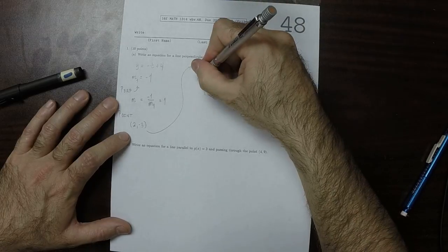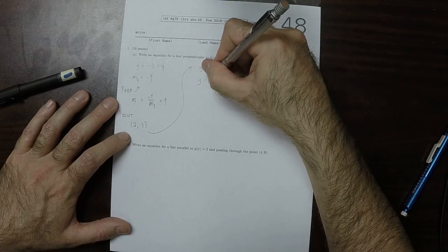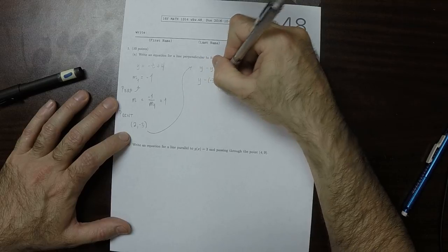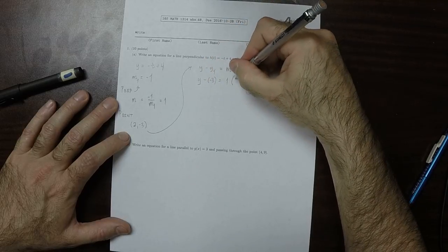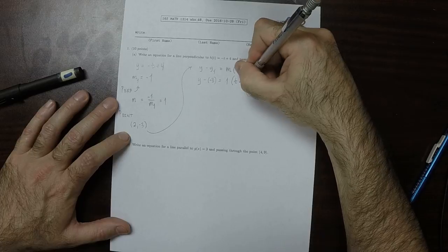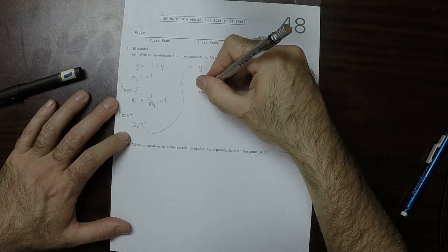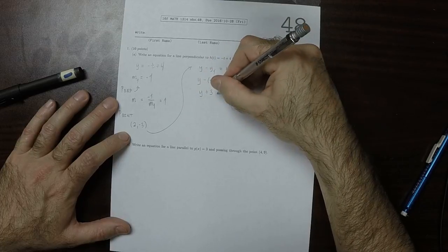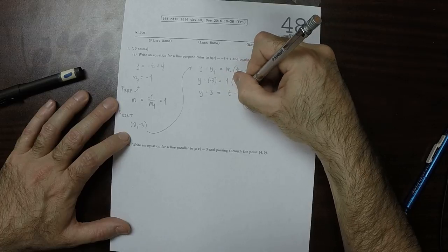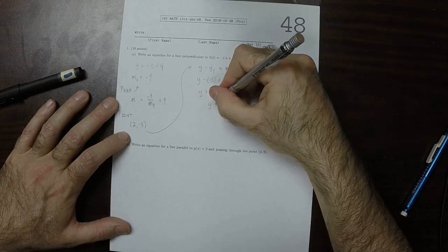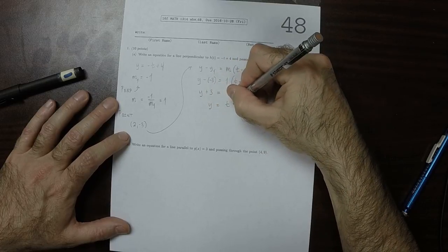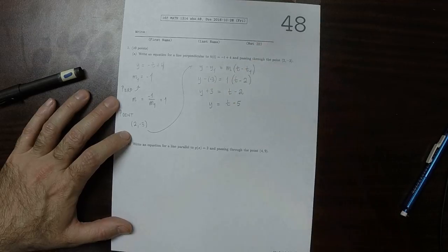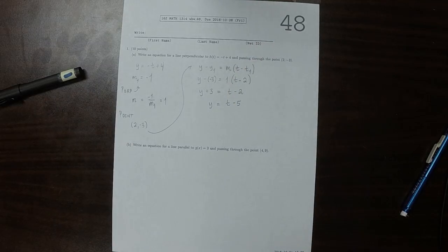So y minus negative 3 is 1 multiplied by t minus 2. So y plus 3 is t minus 2. So y is t minus 5. That's the solution to part A.